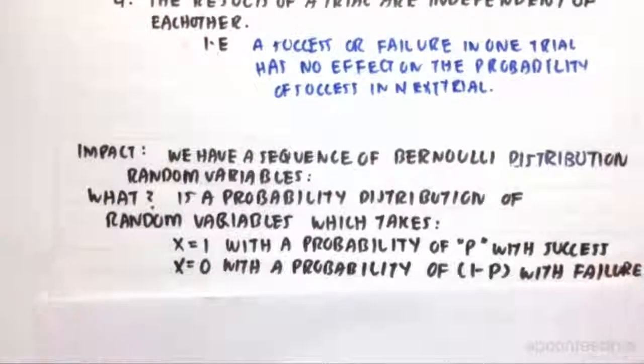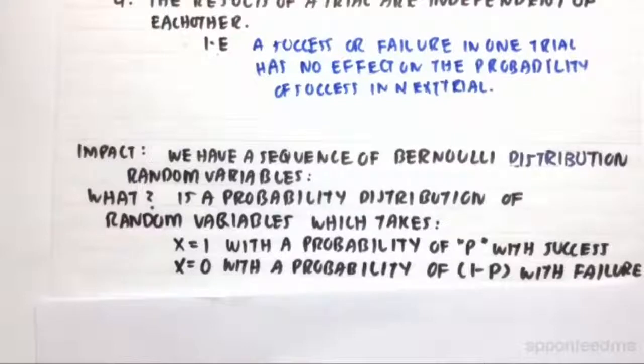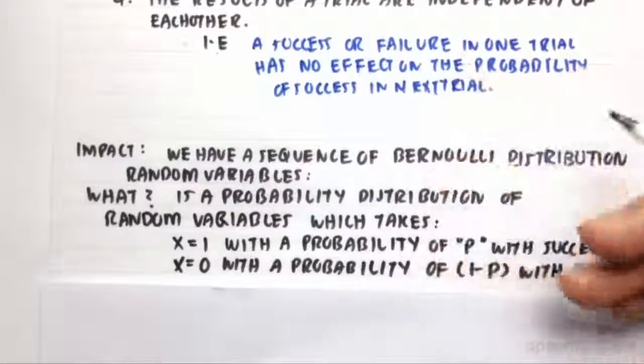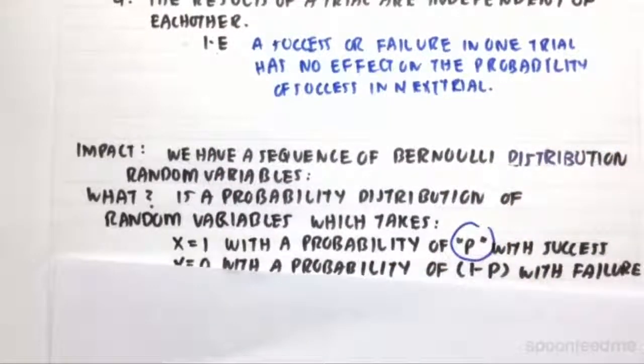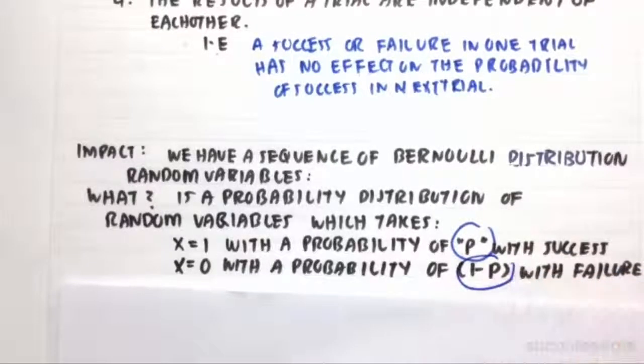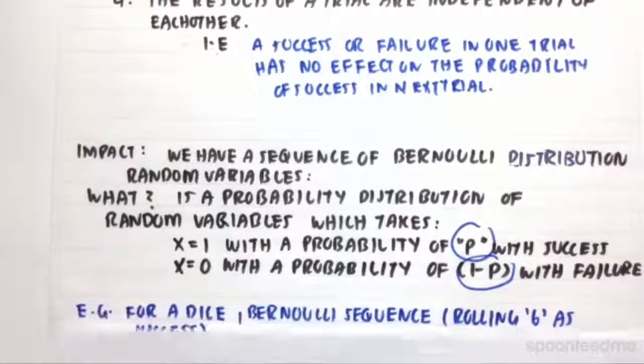The impact is we have a sequence of Bernoulli distributions of random variables. A Bernoulli distribution means we have a sequence of 1s and 0s for successes and failures. It's a probability distribution where x equals 1 represents success with probability P, and x equals 0 represents failure with probability 1 minus P.